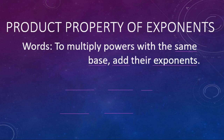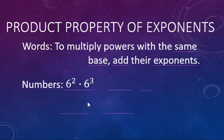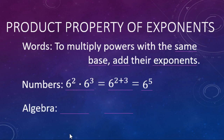If we have the same base, then we're going to add the exponents when we're multiplying our powers. For the first example, six squared times six cubed becomes six to the two plus three, which is six to the fifth power — the same as the very first example we did. Using algebra notation, b to the m times b to the n: we have the same base b, so we add the exponents, giving us b to the m plus n.